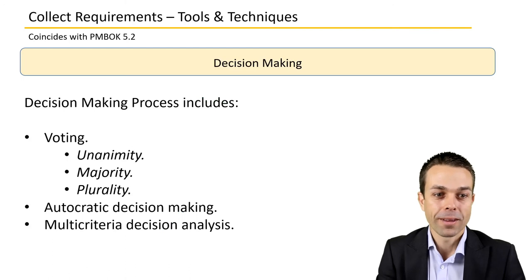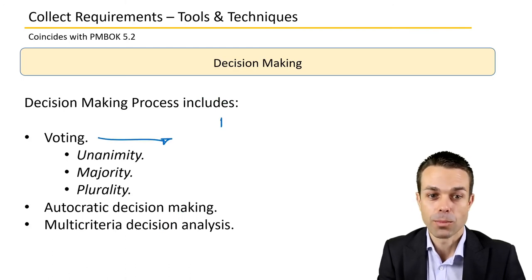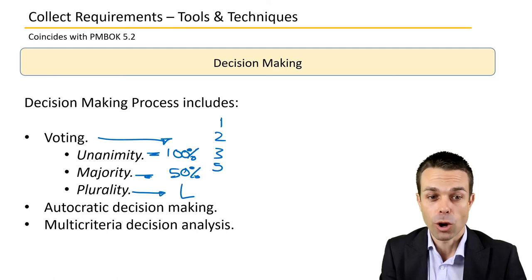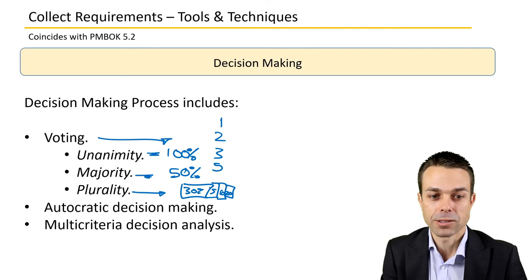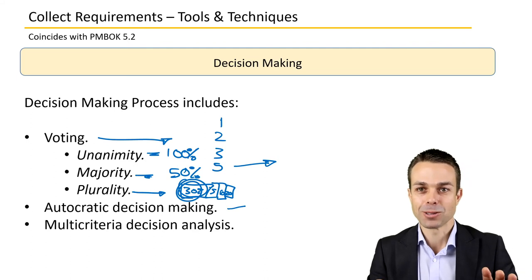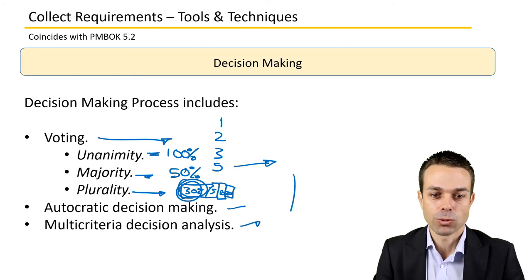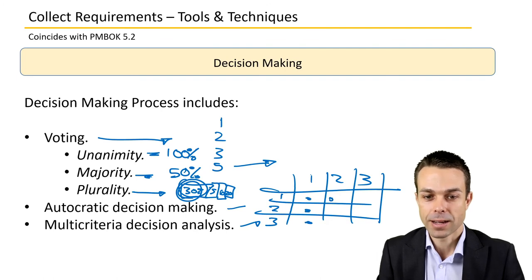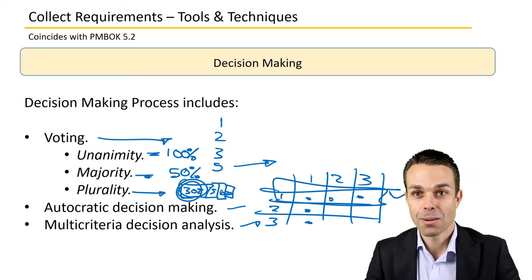We'll need to make decisions along the way, which may involve voting on requirements — which is most important, which is least. Unanimity is where 100% of people agree. Majority is 50% agreeing. Plurality is just the largest block compared to all other blocks — for example, 30% versus groups of 5, 10, and 20. You will see an exam question on voting and those differences. Autocratic decision making is where one person just decides the way forward. Multi-criteria decision analysis has different options and criteria in a matrix — whichever option meets the most criteria is selected.